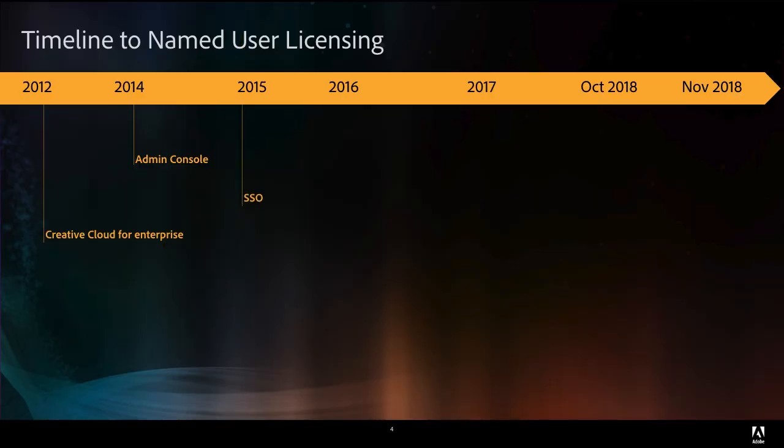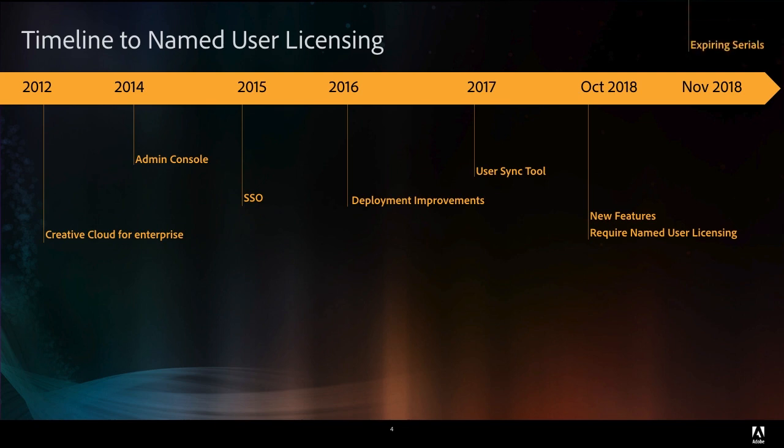I've been at Adobe a long time, about 18 years, and through that time I've seen a lot of changes. Over the last several years, we've had a lot of changes in our Creative Cloud tools. Specifically in 2012, we shipped the first version of Creative Cloud for Enterprise — a big milestone for Adobe. In 2014, we shipped the first version of the Adobe Admin Console, which helped make it easier to manage licenses.